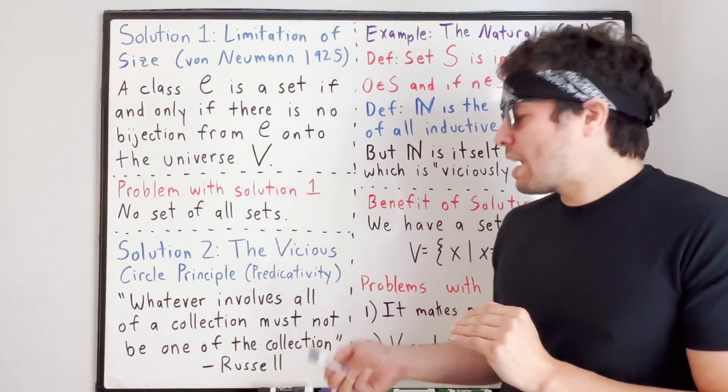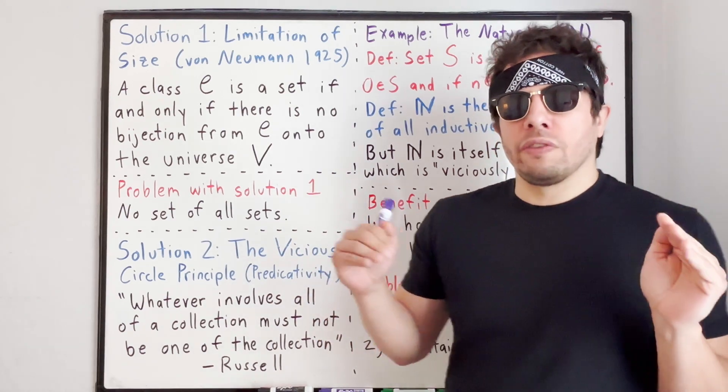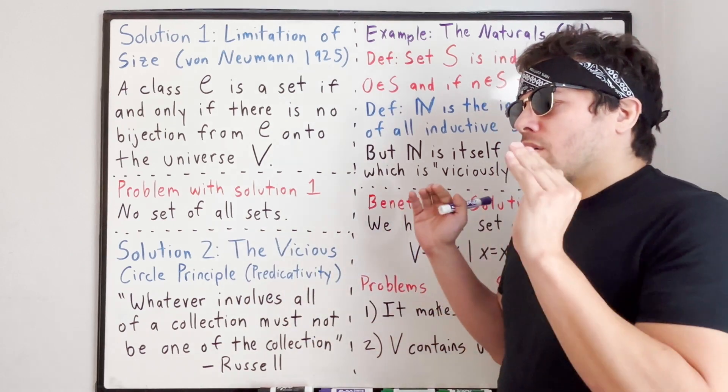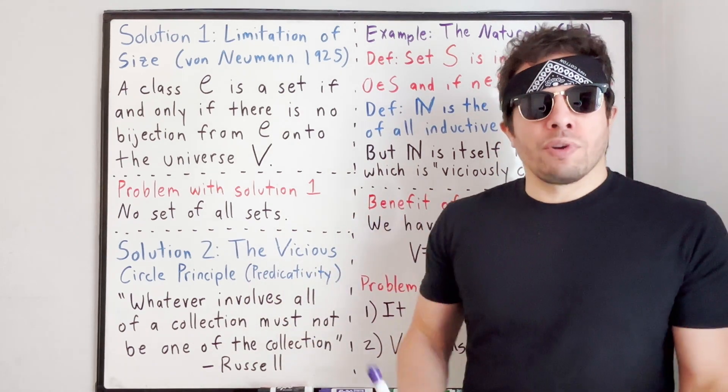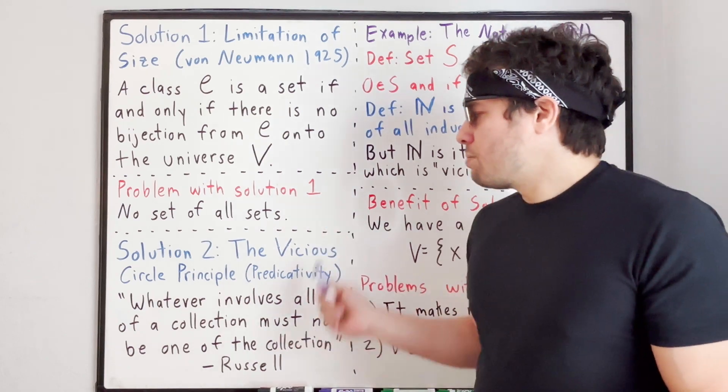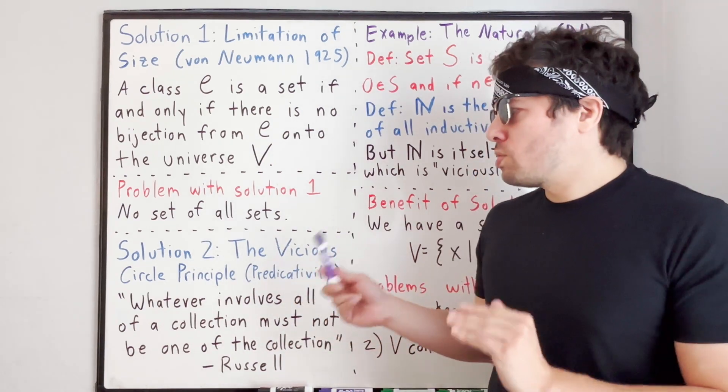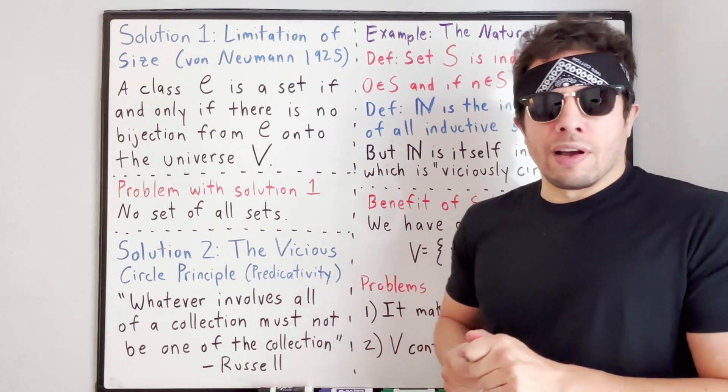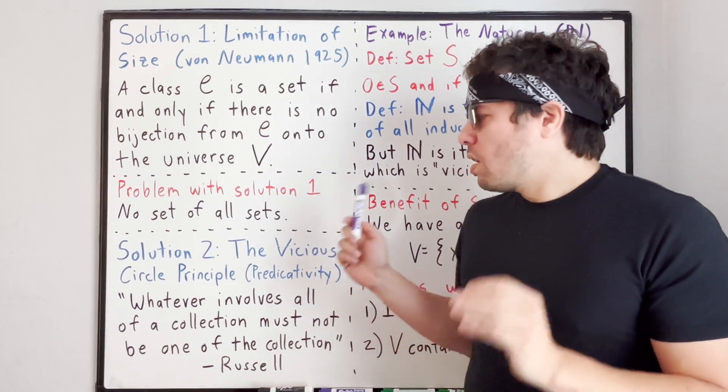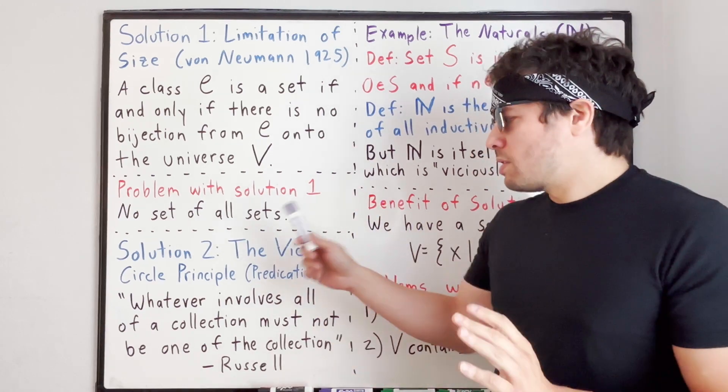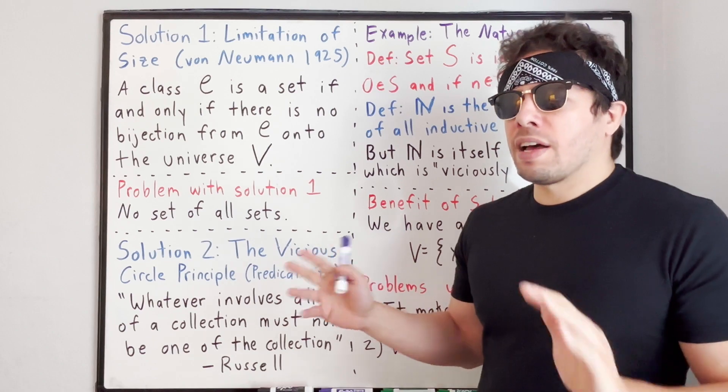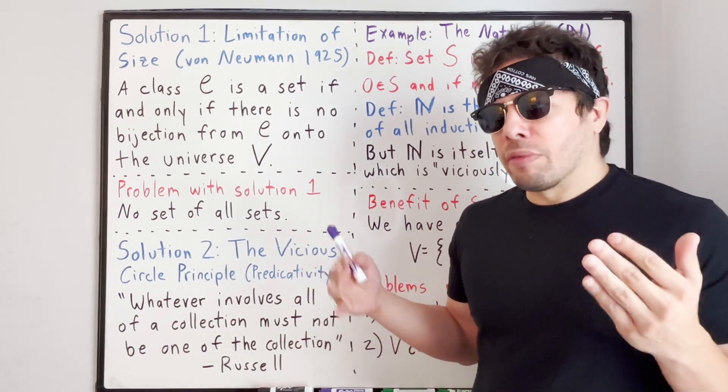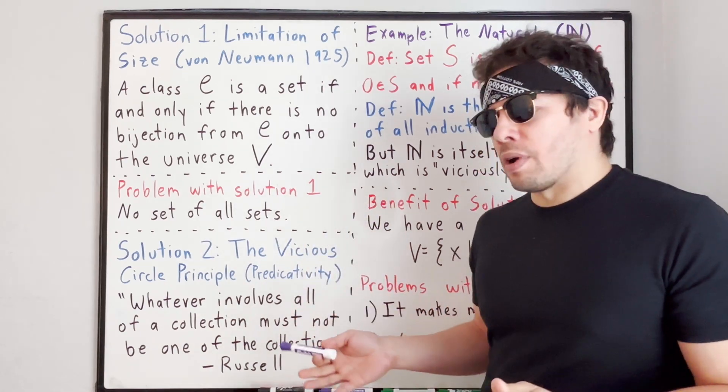There is a little caveat, because when I say strict adherence to the vicious circle principle, I actually want to be talking about predicative adjustments to Frege's original system. In predicative adjustments to Frege's original system, you do have a set of all sets, but you also avoid Russell's paradox at the same time. Often when you hear people talk about the vicious circle principle, you hear about this in the context of Russell's theory of ramified types.